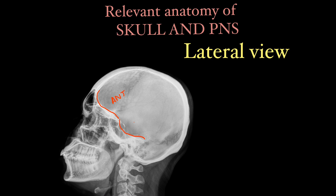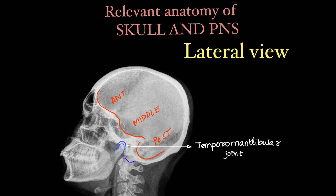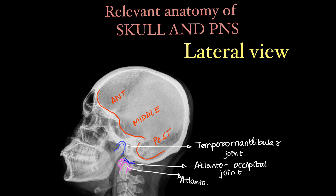On lateral view we can see the skull base. This is the anterior cranial fossa, middle cranial fossa, and the posterior cranial fossa. Here we can see the temporomandibular joint. The other joints we can see are the atlanto-occipital joint and the atlanto-axial joint. These three joints we can see on the skull x-ray.